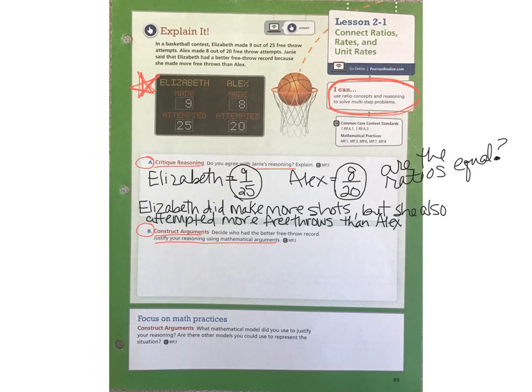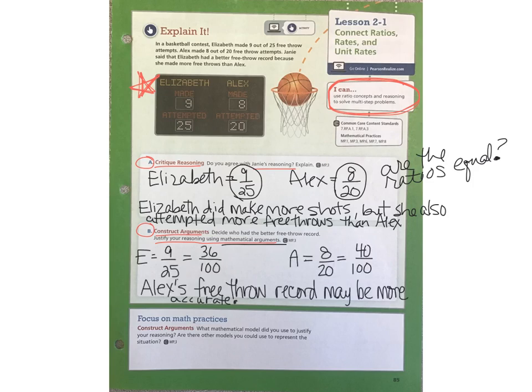In Part B, we are to decide who had the better free throw record and justify it using a mathematical argument — in other words, we need some math to support that decision. One thing you might consider doing in Part B is comparing ratios that have an equivalent denominator. Elizabeth made 9 out of 25 free throws, which is an equivalent ratio to 36 out of 100 if we take both parts of her ratio and multiply by 4.